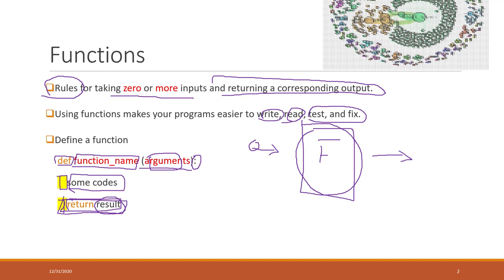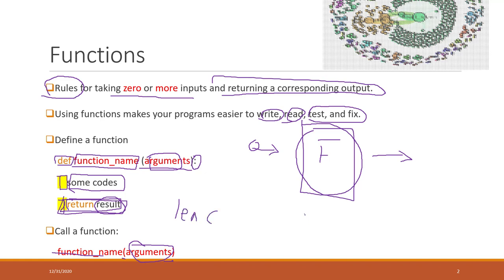That is how we define a function. To call a function, we simply write the function name, parentheses, and provide the required inputs, and it will return the result. We have already used multiple functions that are built into Python, like the len function. For that input, it can be a sequence, a list, or a string — that is the function name and those are the arguments. It will return the number of items within the list or string.